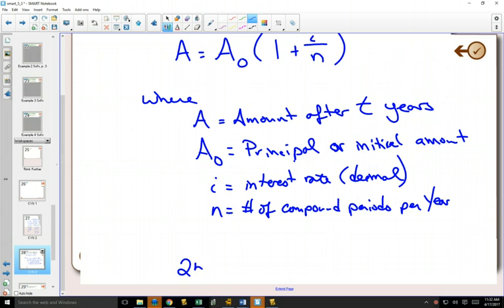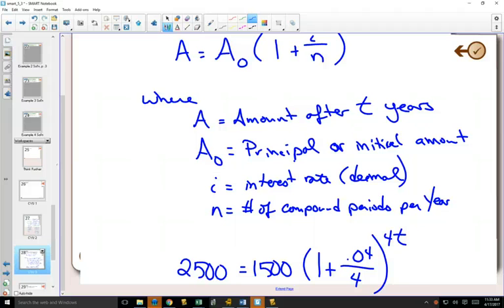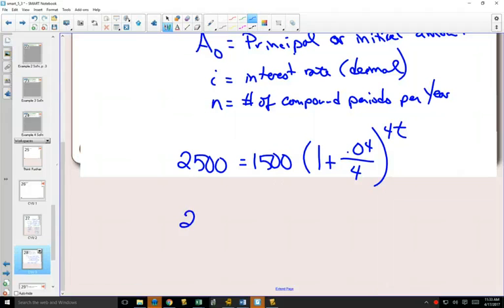So what do we know here? We put things in. We know that the amount we want to be is $2500. We have an initial amount of $1500. Our interest rate is 4%, so we change that to a decimal. Compounded quarterly—that's four times per year. So if I simplify this just a bit, this is going to be 1.01. I wouldn't need to simplify that, but what I wanted you to do is to recognize that our growth factor in this question is 1.01.